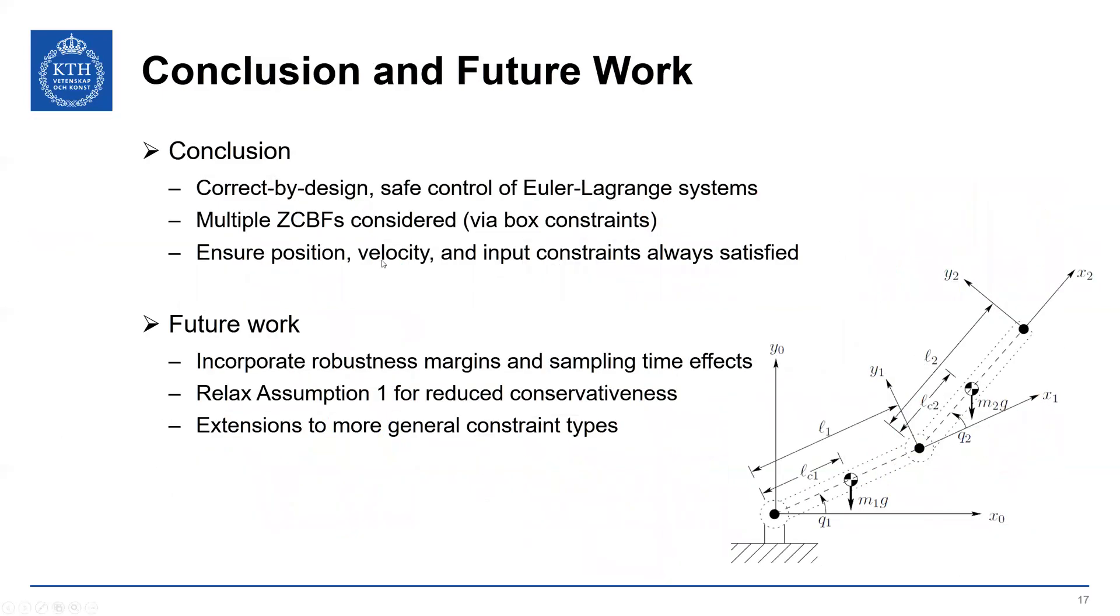So to conclude, we have presented the correct by design method for designing control barrier functions to ensure safety of Euler-Lagrange systems. We address multiple control barrier functions, here considered as box constraints, and we ensure position, velocity and input constraints are always satisfied at the same time. Future work, we plan to submit this relatively soon, is to incorporate robustness margins and sampling times to address implementation of the control law, also relaxation of assumption one for reduced conservativeness and extensions to more general constraint types. With that, I'll conclude my talk and take any questions. Thank you.